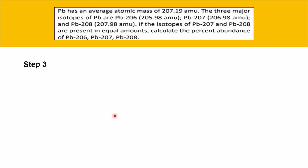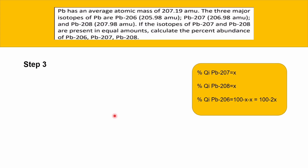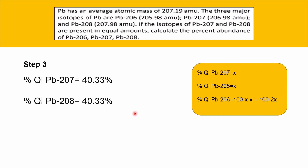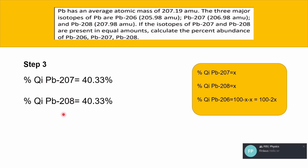Now for the final step — step 3. We already set up our assumptions, so we just plug in the value from step 2. The isotopic abundance for Pb-207 and Pb-208 are equal, so we can write that 40.33% is the isotopic abundance for both Plumbum-207 and Plumbum-208.